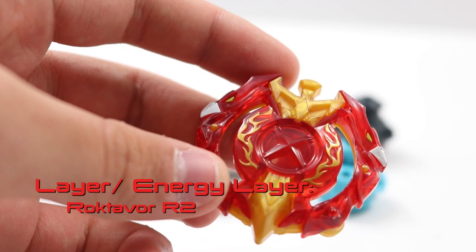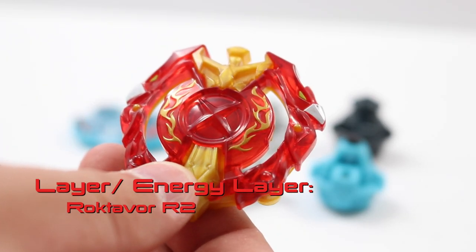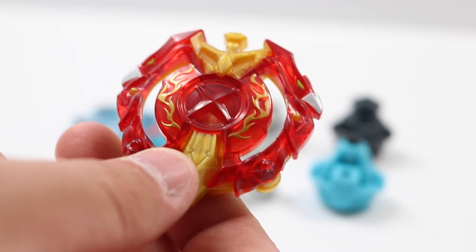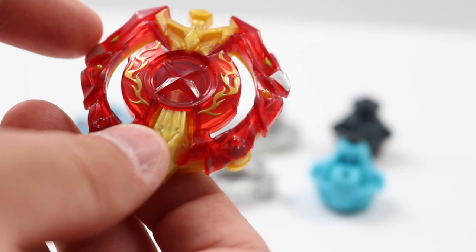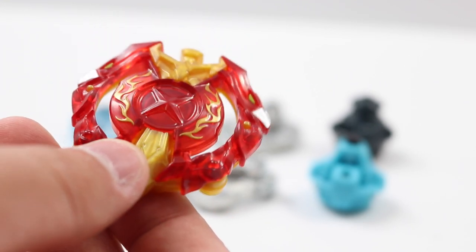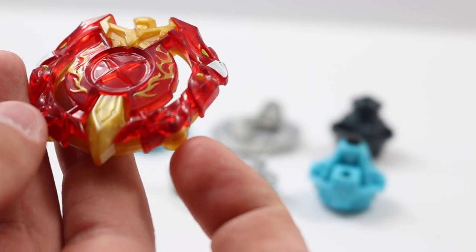As you can really tell, Hasbro made it pretty identical to Takara's Excalibur or Excalius, however we like to call it, with the little silver arrows here, the beaks, but that's okay. I really do like the design on this Beyblade. Looks pretty nice.